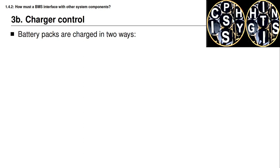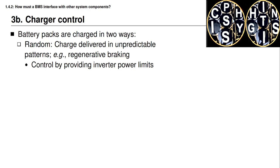One application that requires the battery pack to communicate with the outside world is when the battery pack is being charged. Battery packs are charged generally in two different ways. The first is random charging, where charge is delivered in unpredictable patterns to the battery pack from the host application. In a vehicle, this happens when the driver presses the brake pedal — instead of using friction brakes, it's possible to use the motor to put braking energy back into the battery pack, recovering energy that would otherwise be lost and improving vehicle efficiency.